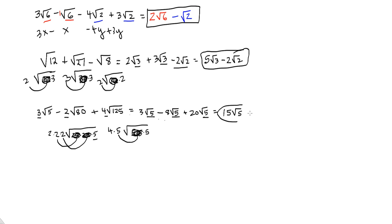So your key to adding and subtracting radicals is: first, make sure they're all simplified as much as they can be. Then combine like terms based on what's under the radical signs — those are your like terms. Also, if you have a number with no radical sign, treat those as whole numbers, and whole numbers can only be combined with other whole numbers. That's adding and subtracting radicals.